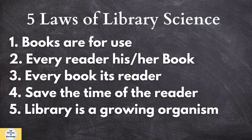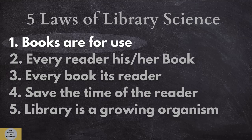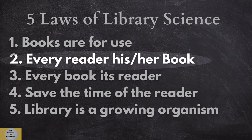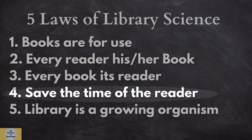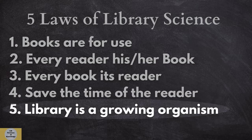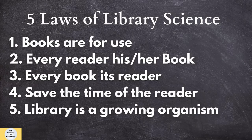The first law is: Books are for use. The second law: Every reader his or her book. The third law: Every book its reader. The fourth law: Save the time of the reader. And the fifth law: Library is a growing organism. We are going to see these laws one by one.